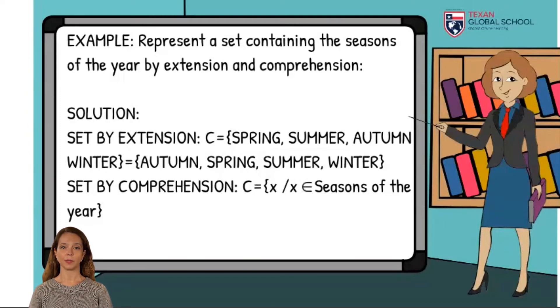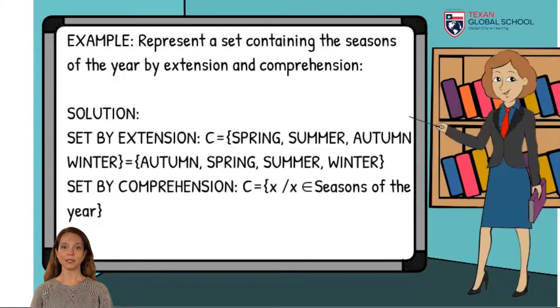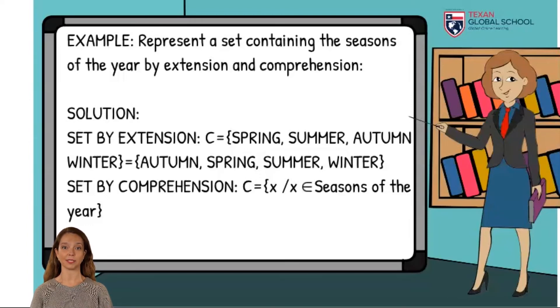For the set by comprehension, we observe that the common characteristic is that they are seasons of the year. Therefore, it is concluded that the set C is equal to all the elements of X, such that X belongs to the seasons of the year.